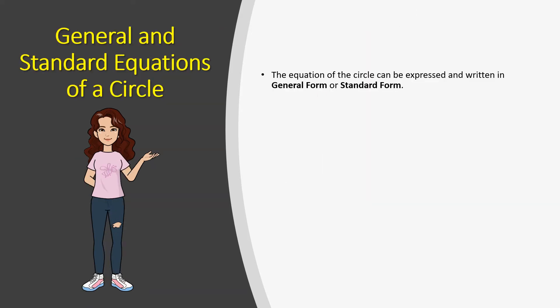The equation of a circle can be expressed or written in two forms. First is the general form. The general form is the equation where d, e, and f are constants.